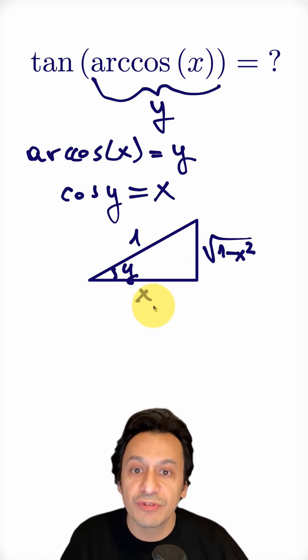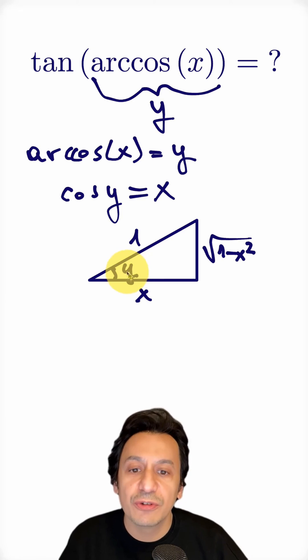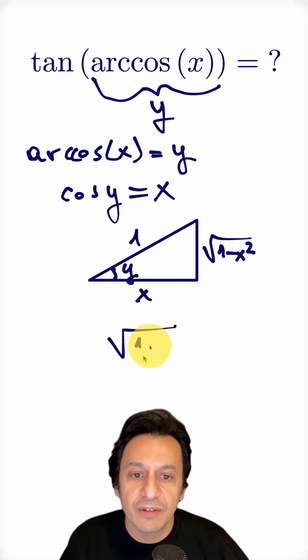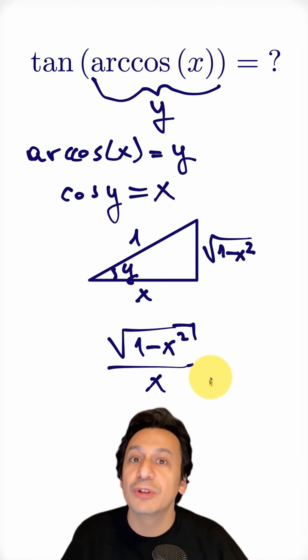Now, all I have to do is find tangent y. Tangent y means the ratio of the side opposite y to its adjacent side. And this way, I find the answer to the question in terms of x.